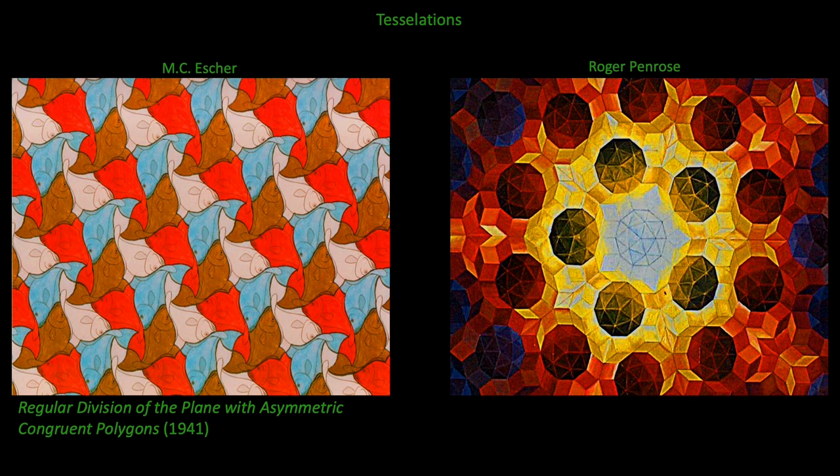M.C. Escher's first paper, Regular Divisions of the Plane with Asymmetric Congruent Polygons in 1941, detailed his mathematical approach to artwork. He studied color-based division and developed a system for categorizing combinations of shape, color, and symmetrical properties that later mathematicians termed crystallography.